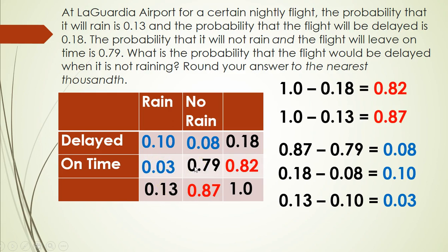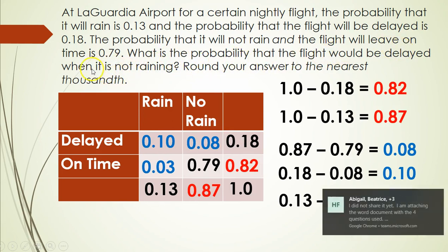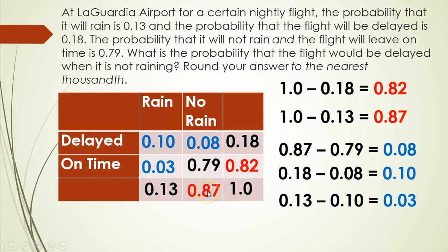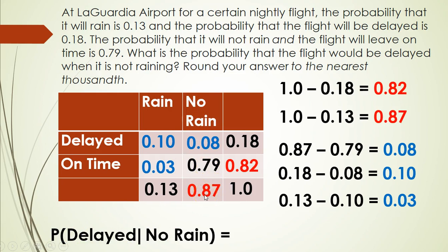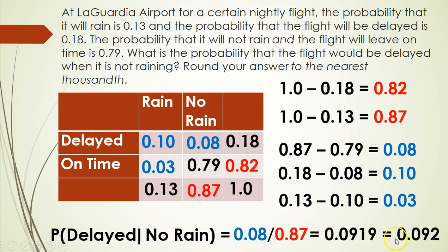Now we answer the question: what is the probability that the flight will be delayed when it is not raining? Notice the word 'when' — that's really important because it tells us this is a conditional probability. We take a part over a total. Since it says 'when it's not raining,' the total for no rain is 0.87 — that's our denominator. The delayed and no-rain cell is 0.08, so we put 0.08 over 0.87 and divide. That gives us 0.0919, and rounded to the nearest thousandth, the answer is 0.092.